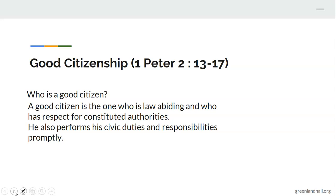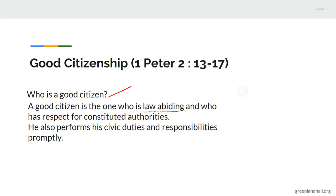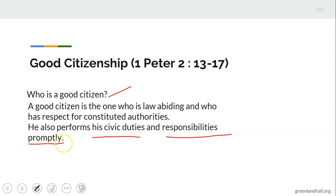Who is a good citizen? A good citizen is the one who is law-abiding and who has respect for constituted authorities. He also performs his civic duties and responsibilities promptly. Such people are not forced — they know what to do at the right time and they perform their duties and responsibilities promptly.